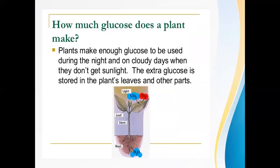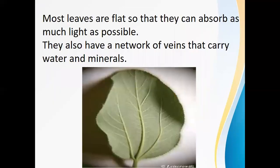How much glucose does a plant make? Plants usually make enough glucose to be used during the night and on cloudy days when they don't get sunlight. That extra glucose is stored in the plant leaves and other parts. Most leaves are flat so that they can absorb as much light as possible. They also have a network of veins that carry water and minerals.